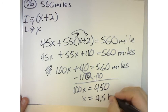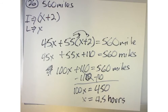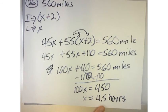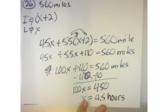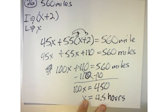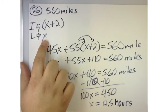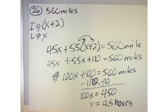So on the ACT, they might ask you how long did they spend on the road total? And you go through all this work and you're excited because you see option number B is 4.5 hours and that's what you got when you solved for X. But if they asked the question, how long were they on the road total, what would you have to do? You'd have to plug this into here and then plug it into here and add those two up because that's how much time they spent on the road total.